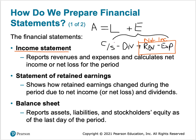If we include dividends, that provides us with retained earnings. That information is what you'll find on the statement of retained earnings, which shows how retained earnings change during the period due to net income or loss and dividends.